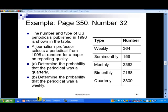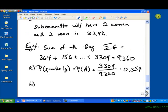Now, in part B, we're asked to determine the probability that the periodical was a weekly. We have 364 of those, right? So let's go ahead and answer that one. The probability that the periodical was a weekly, which we'll write probability of B.